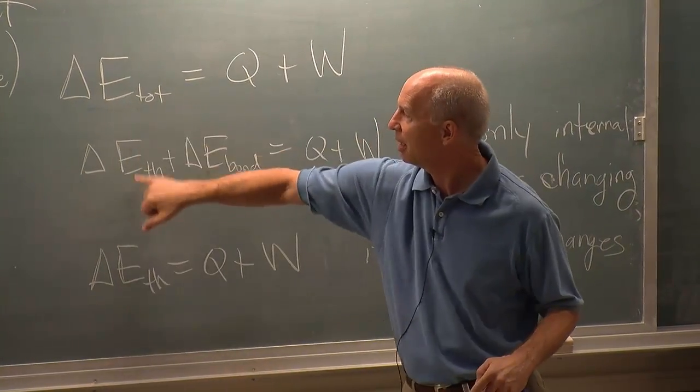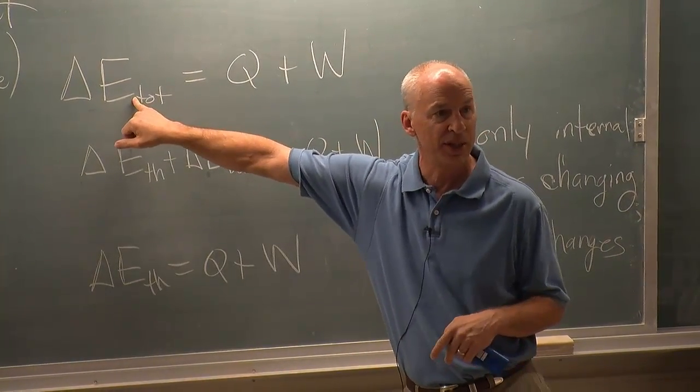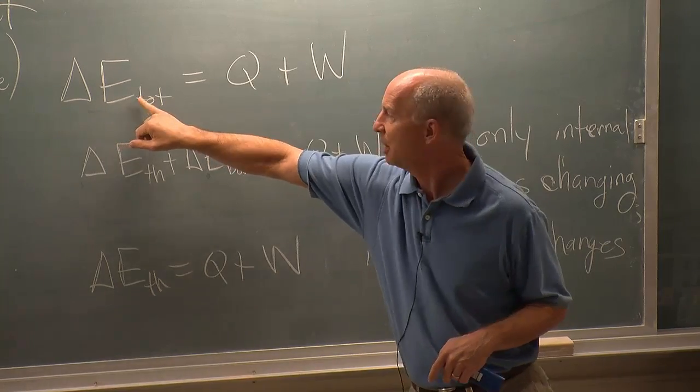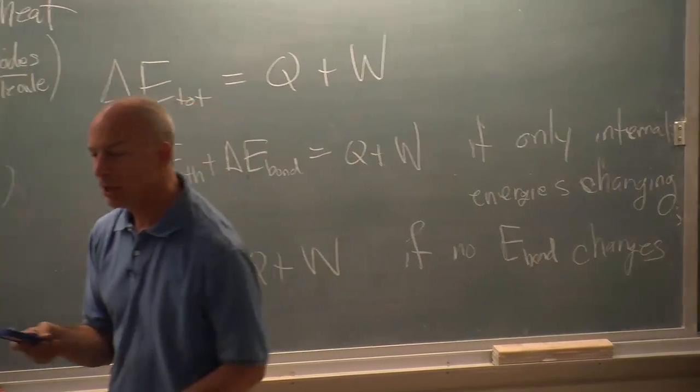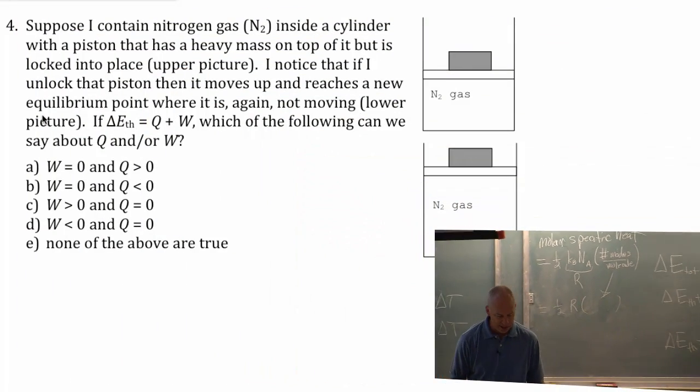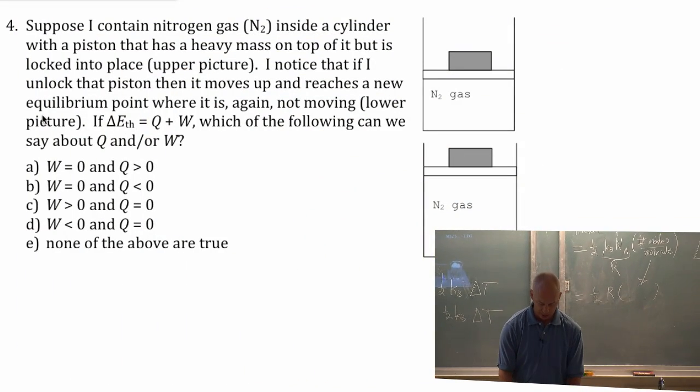So delta E thermal is the only thing changing, or E thermal is the only thing changing in E total. So delta E total is delta E thermal. That is Q plus W here. What can we say about Q and W?